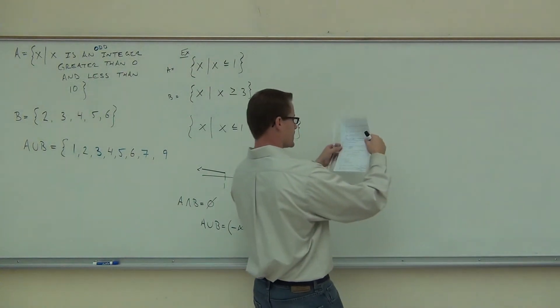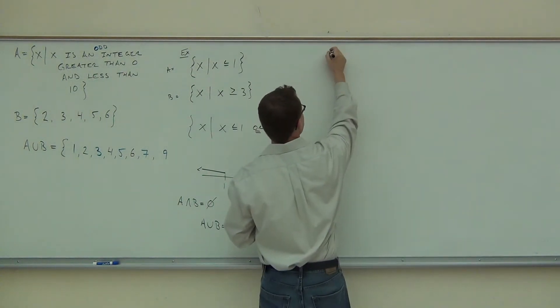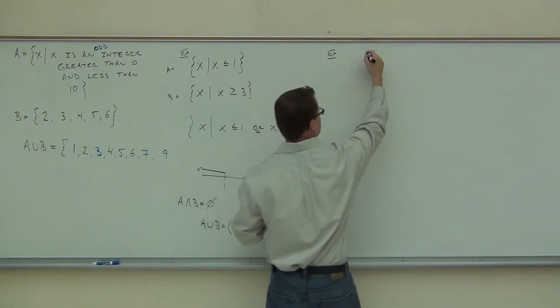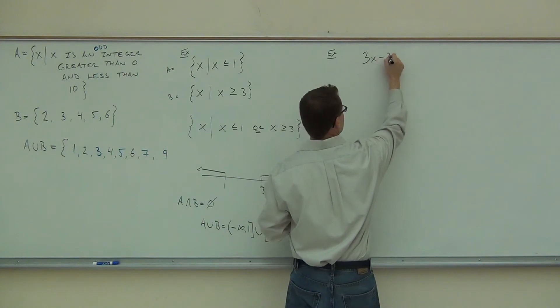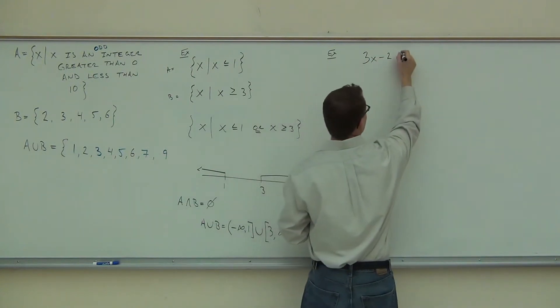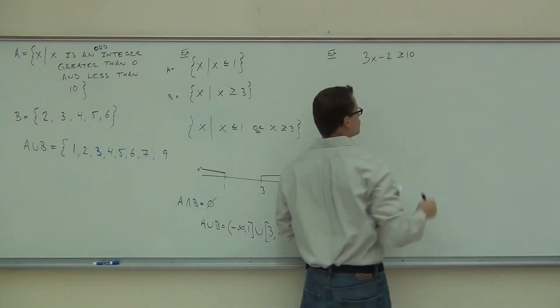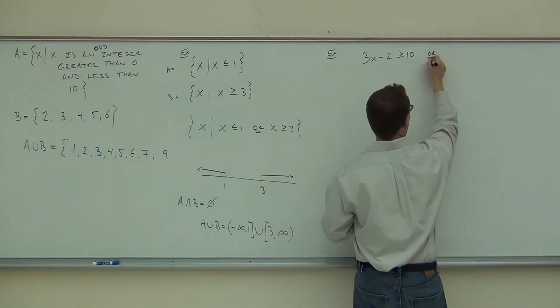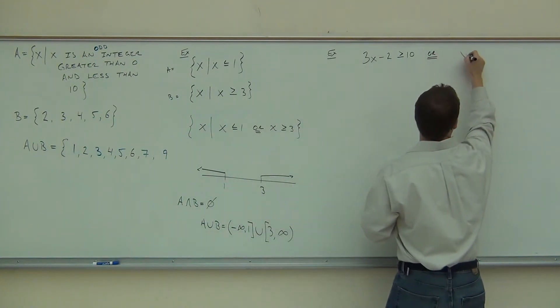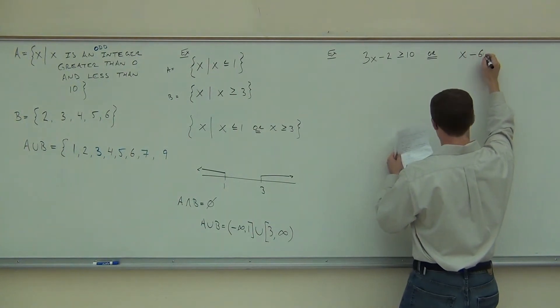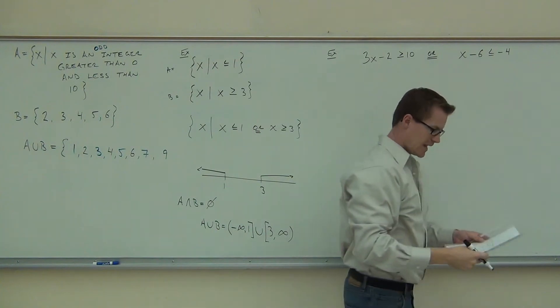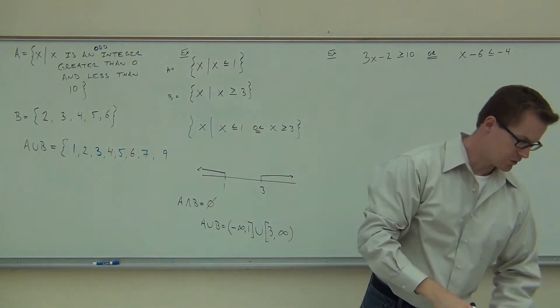So let's try a couple of examples here. First one, let's suppose I have 3x minus 2 greater than or equal to 10 or x minus 6 is less than or equal to negative 4.